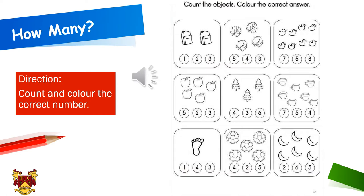Let's see the first picture — what are these? These are school bags. Now let's count how many school bags you can see: one, two. Yes, two school bags! So you are going to color the circle with number two.